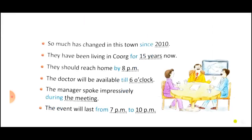Next: So much has changed in this town since 2010. 'Since' tells you about the beginning point of that action, and then that action continued — the ending time is not given, but the beginning point is given, so we use 'since'. And: They have been living in Kirk for 15 years now. The duration of 15 years is given, but we don't know when it started or ended — no particular date is given — so we use 'for' when the duration is given.